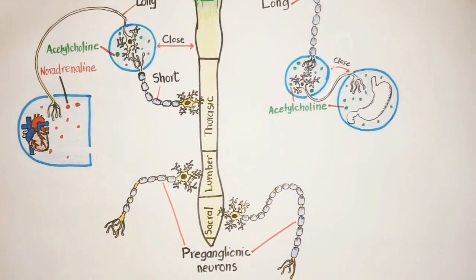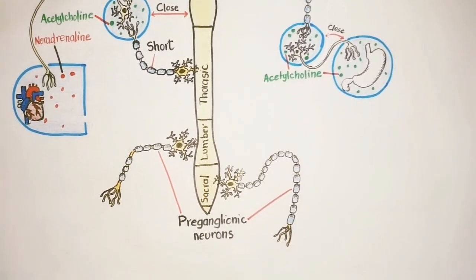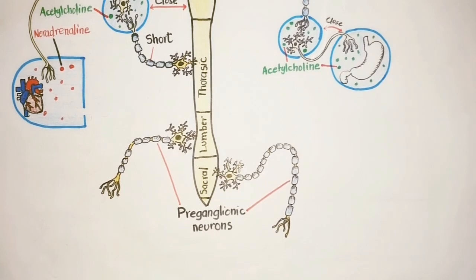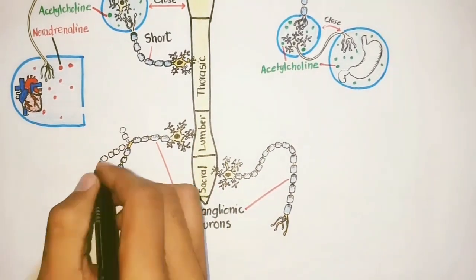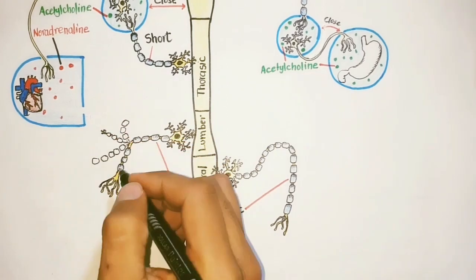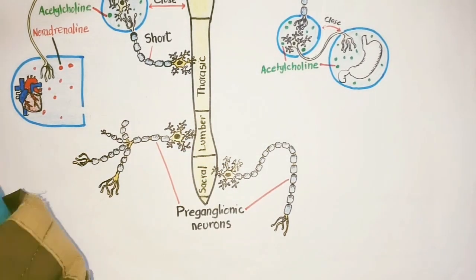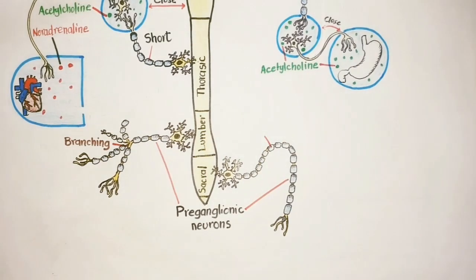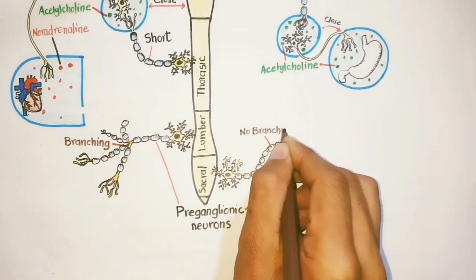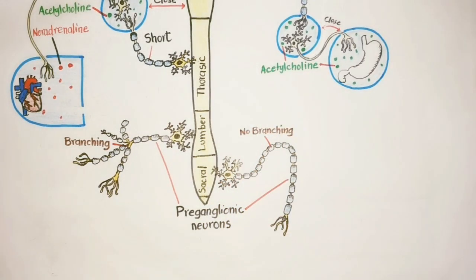In addition, the sympathetic fibers extensively give rise to branches and stimulate many ganglia at once by a single nerve fiber. While in case of parasympathetic fibers, there is no branching except the vagus nerve, which innervates most of the thoracoabdominal organs.